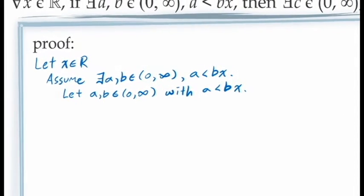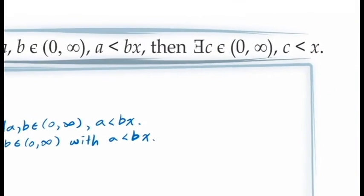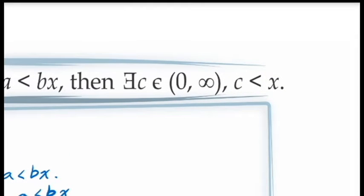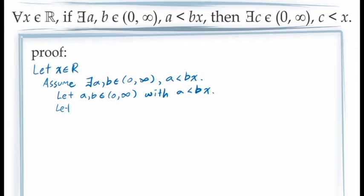Turning our attention to the statement that we're required to demonstrate — the consequent of our conditional statement — we have to show that there is at least one value of c in the interval from 0 to infinity for which c is less than x. Because this is the statement we're required to prove, we need to use the principle of existential generalization. To prove a statement with an existential quantifier, we need to provide a specific example — that is, to show that a value of c exists satisfying this inequality, we need to give an example of a value of c that satisfies it.